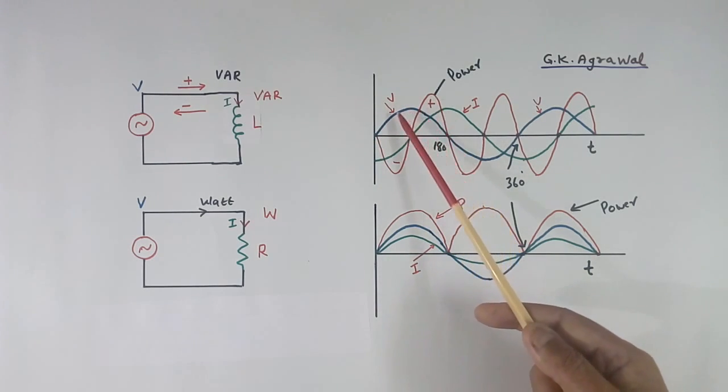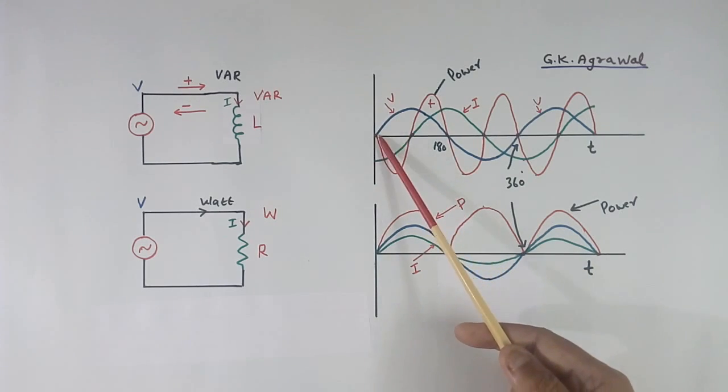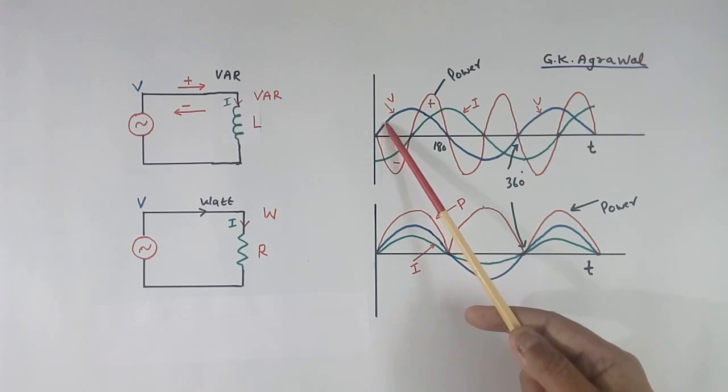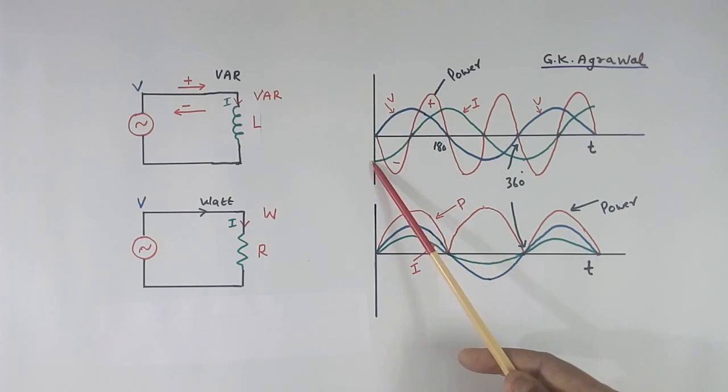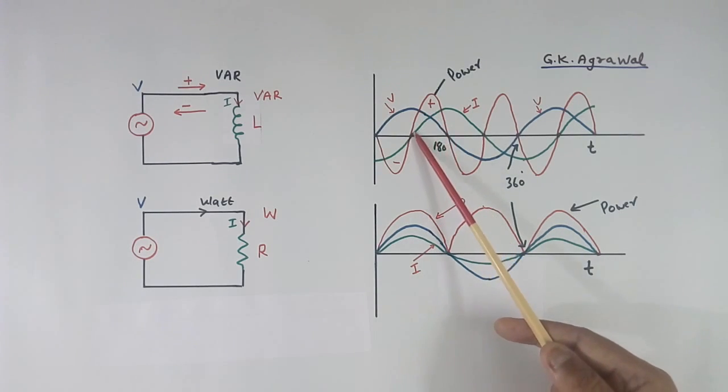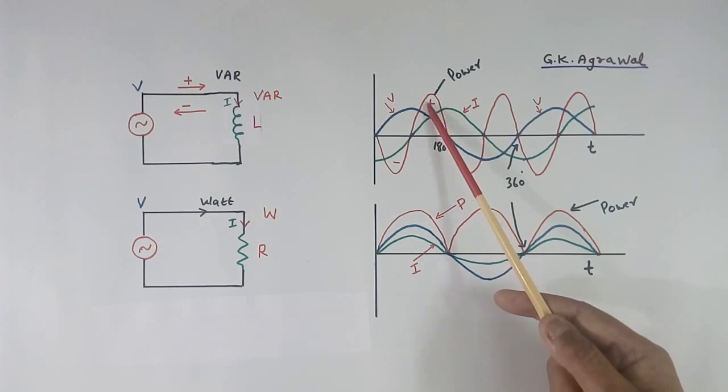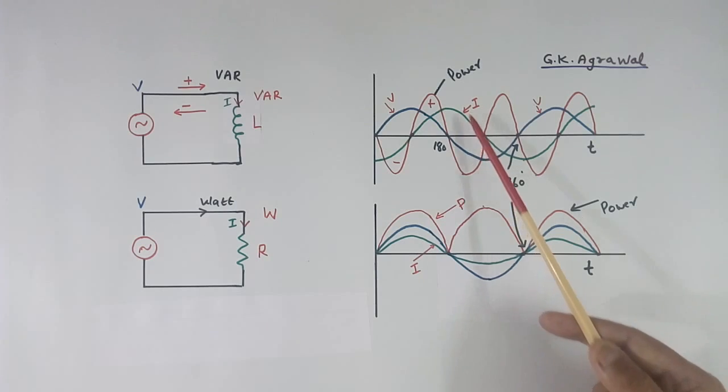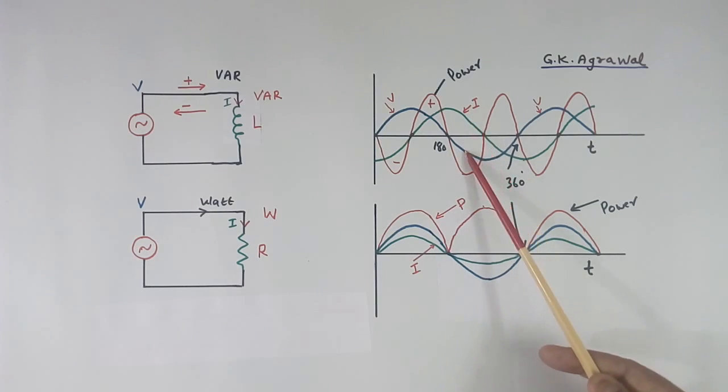To get power, we multiply voltage and current. Current is shifted by 90 degrees from here to here. When we multiply voltage blue color with green color current, this is negative and this is positive, so multiplication will come negative. So we get power like this. From this point to this point, voltage is positive, current is positive, so multiplication will come plus. Here again current is plus, voltage is minus, so multiplication will be minus.